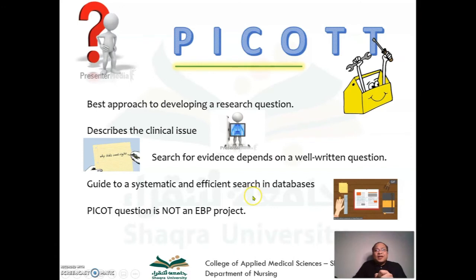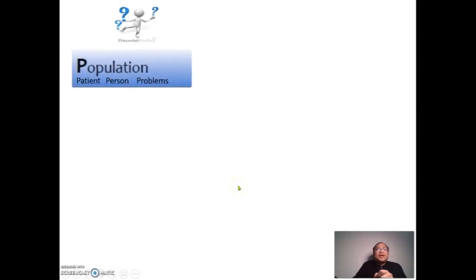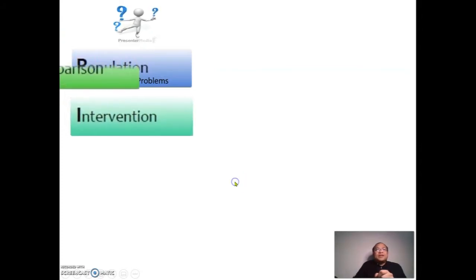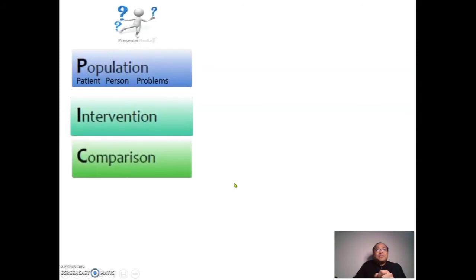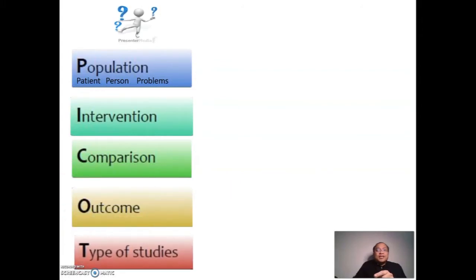Let's look into the details of the PICO format. We have the letter P, which stands for patient, person, population, or problem; the letter I for intervention; the letter C for comparison; the letter O for outcome — that's already PICO. The letter T can be the type of studies, or it can stand for time or the type of question.